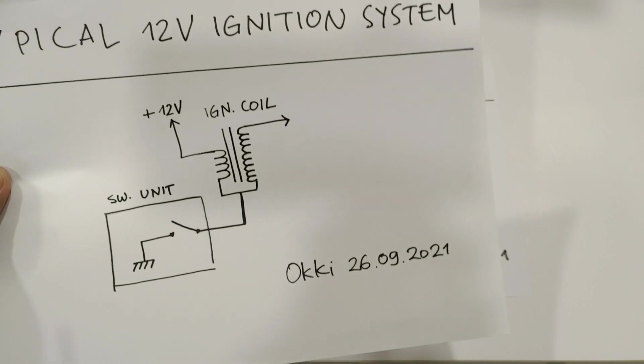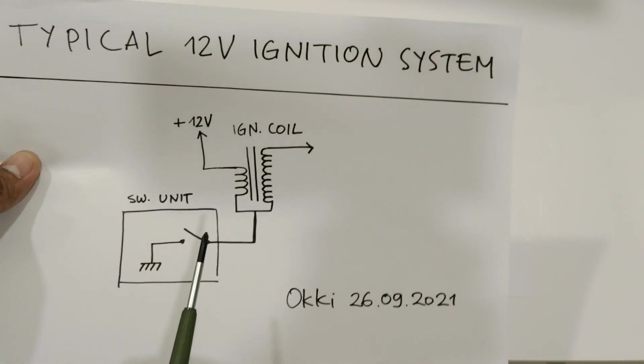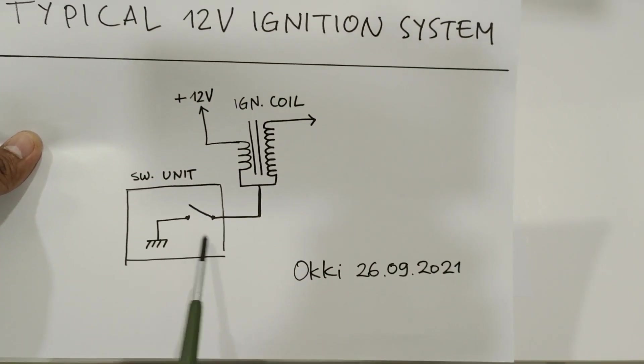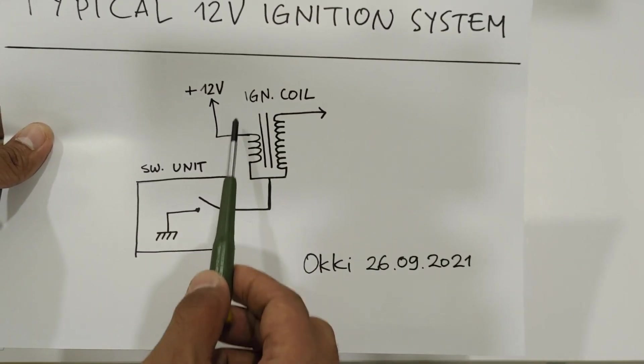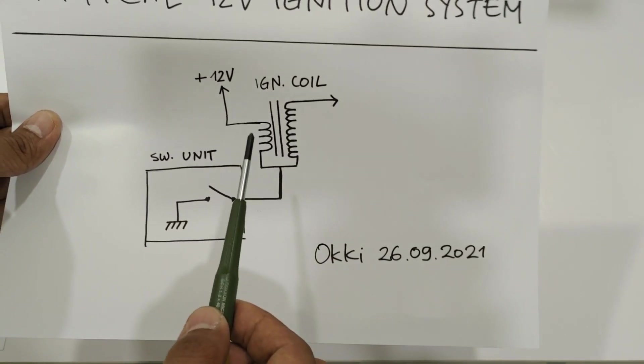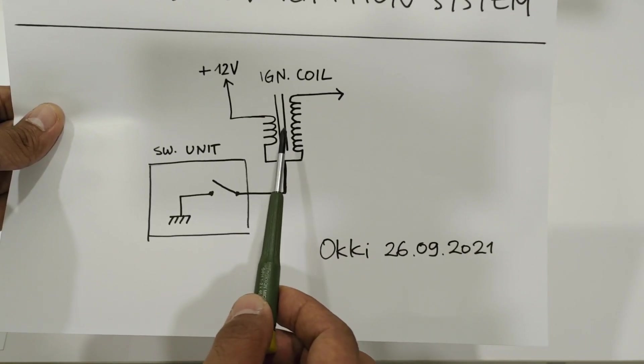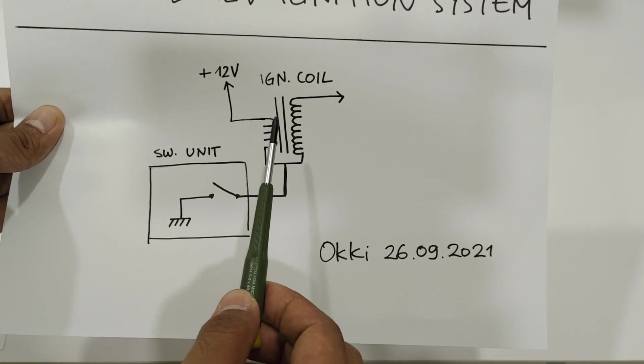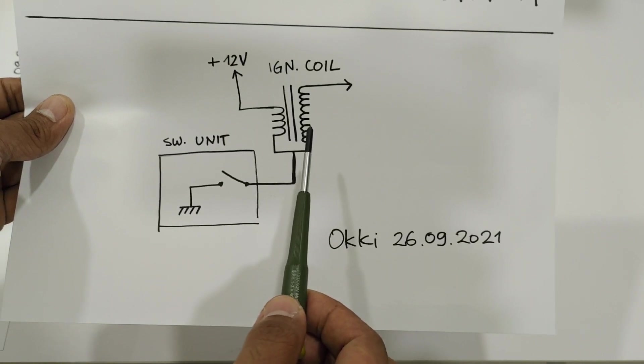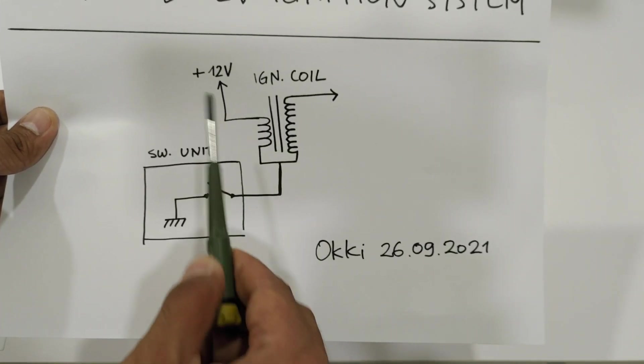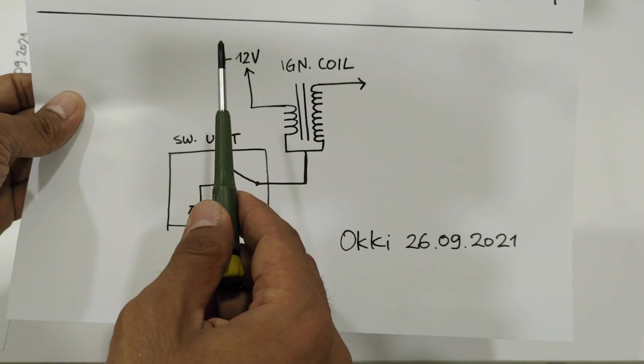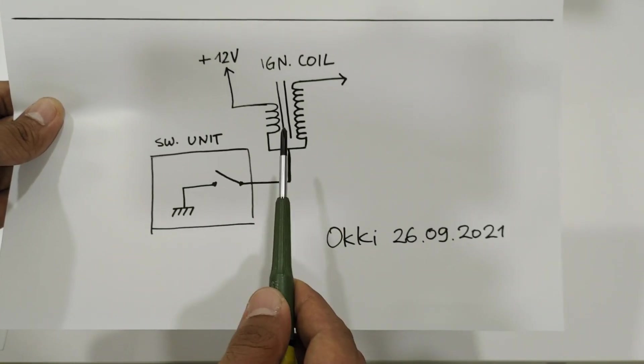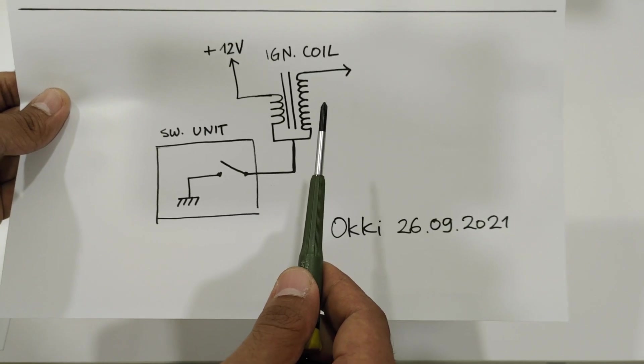If the switch is closed, the coil will be powered and the magnetic field will build up. I mean the energy will be stored in magnetic field.